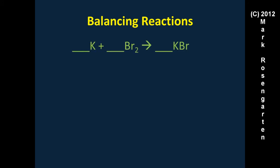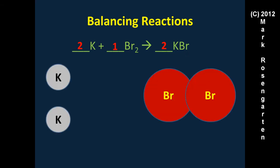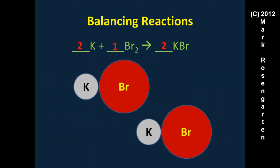Example two: potassium and diatomic bromine form potassium bromide. We have one potassium on each side — that looks good. But we have two bromines on the left and one on the right, so we put a two in front of KBr. That messes up potassium, so we revise and put a two in front of K as well. Now there are two potassiums and two bromines on each side. The atoms rearrange and we end up with two formula units of potassium bromide.